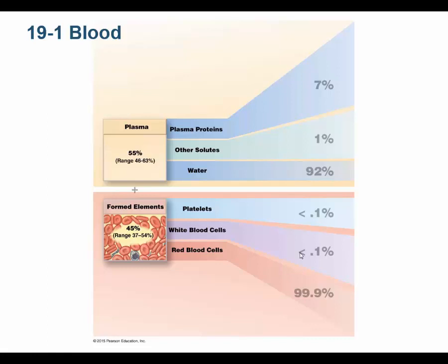Blood is composed of two components: the liquid component called plasma and the cellular component called formed elements. We use the term 'formed elements' rather than 'cellular component' partly because platelets are not full cells — they are cell fragments, specifically thrombocytes. There's likely a historical reason as well.